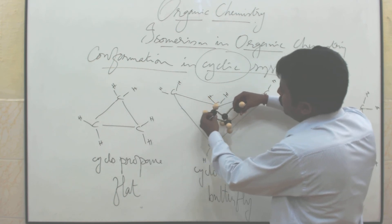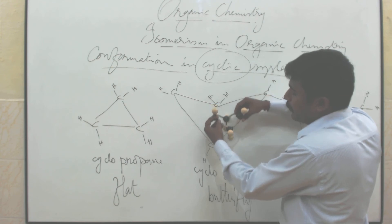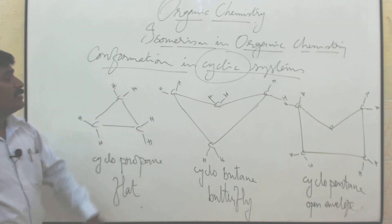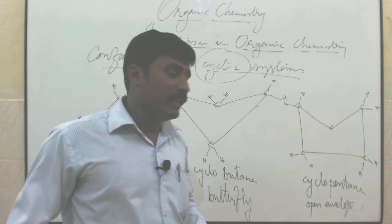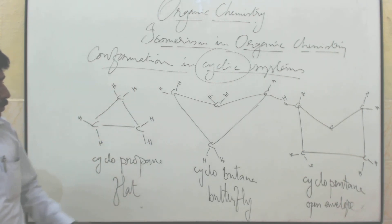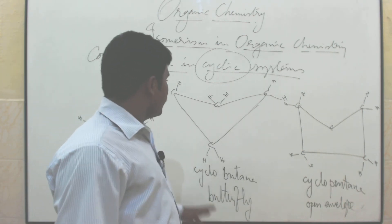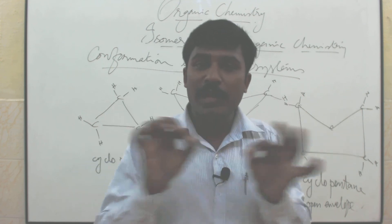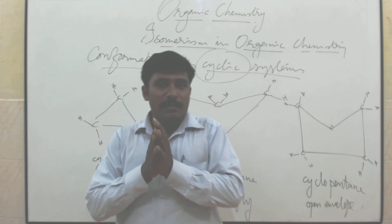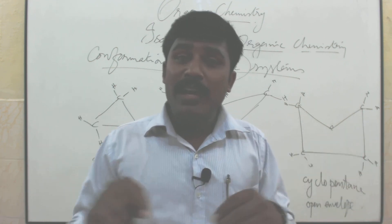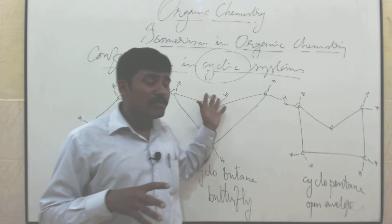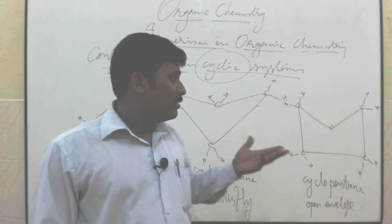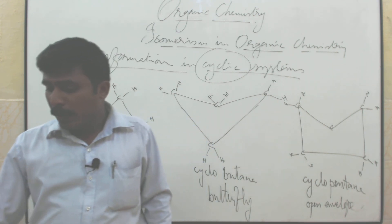This is down — this will be like a butterfly shape. So in summary, confirmation in the cyclic system: minimum you need 3 carbons to make a cycle. Cyclopropane exists in a flat structure. Cyclobutane exists in a butterfly structure. Cyclopentane exists in an open envelope structure. A C single bond means easy rotation, but this rotation is not always possible because it depends upon the combining atoms — sometimes the atom will be small or bigger in size.